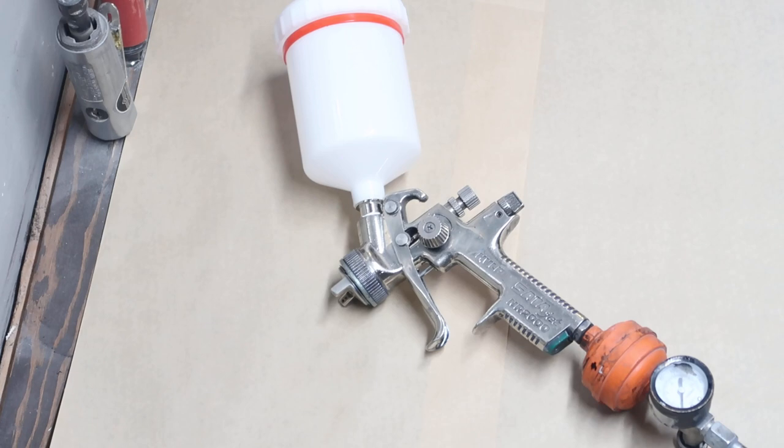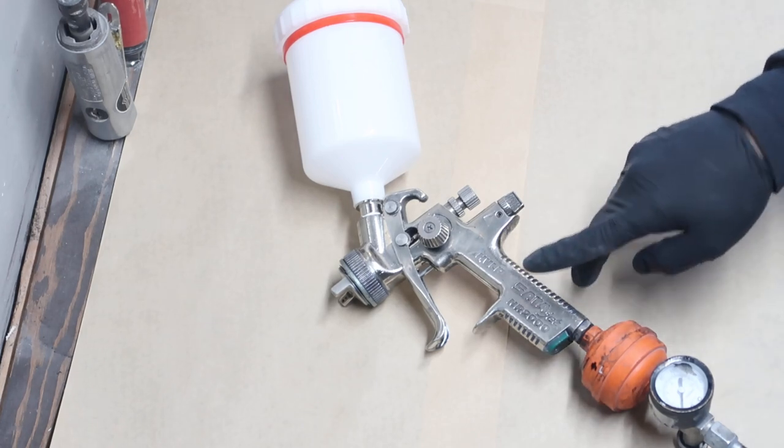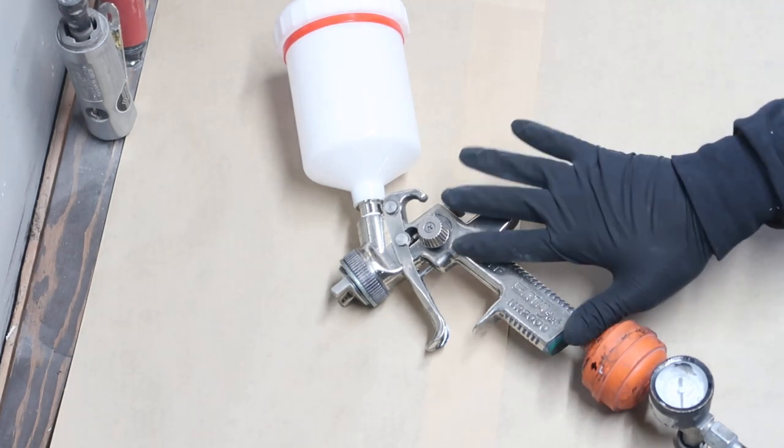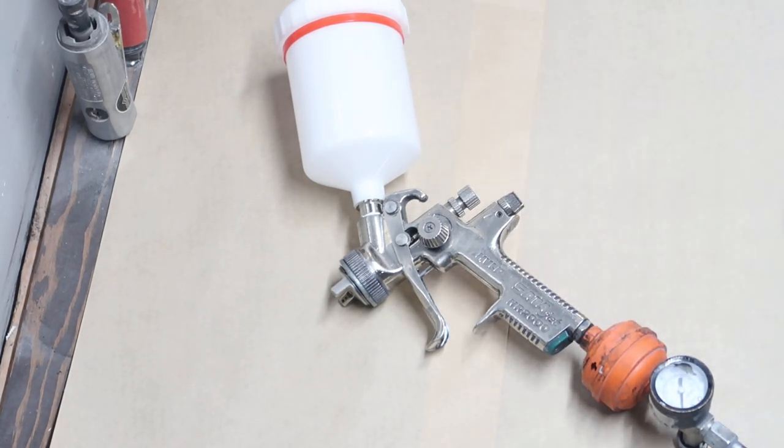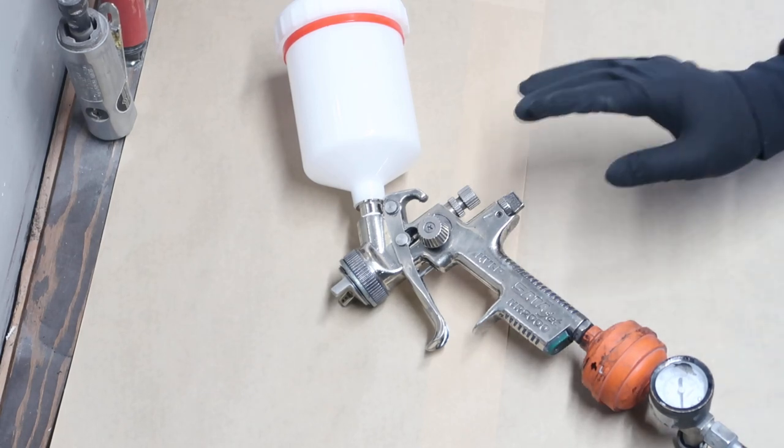This gun right here is a SATA J2000, made in Germany. I've had it for about ten years and it's still spraying really good. I'm going to explain the settings that are on spray guns. I'm not going to be too technical, just trying to be clear on how these things work.